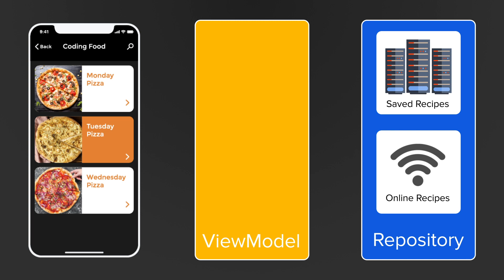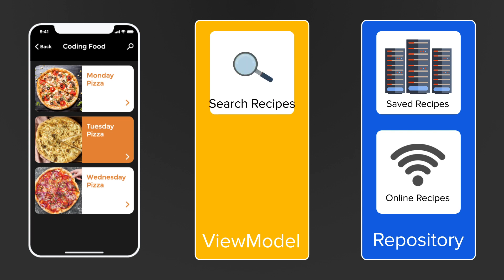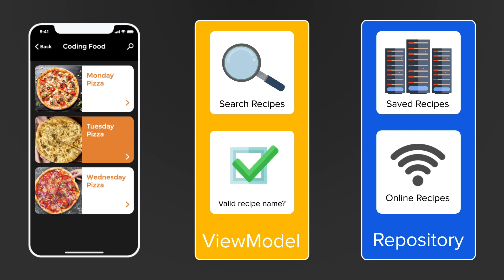The ViewModel contains the business logic. Business logic is the real program logic that isn't just updating a UI element — for example, filtering a list or validating user input. The ViewModel is in direct communication with the model to get access to the data it needs.